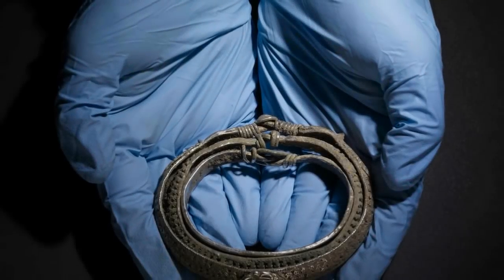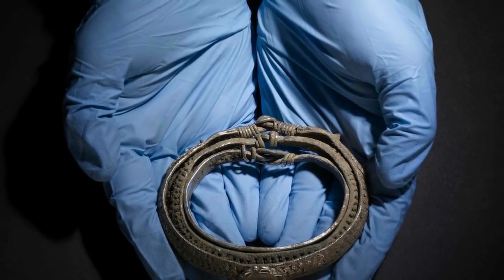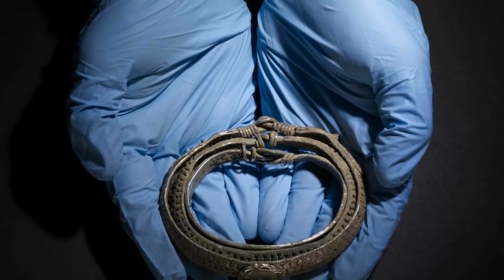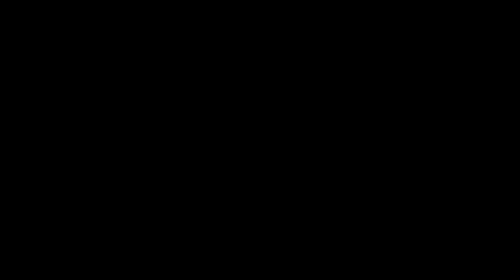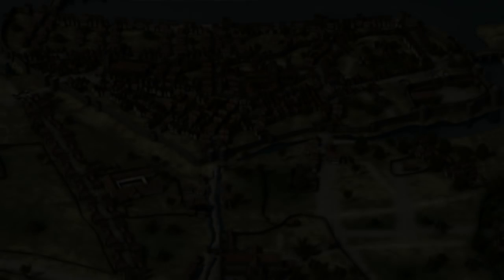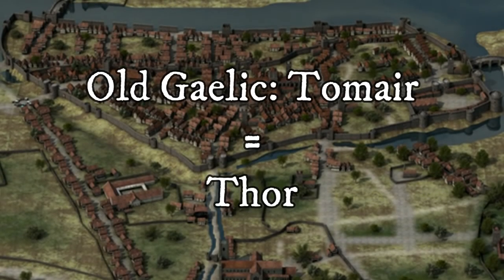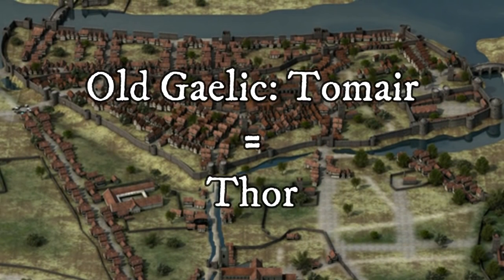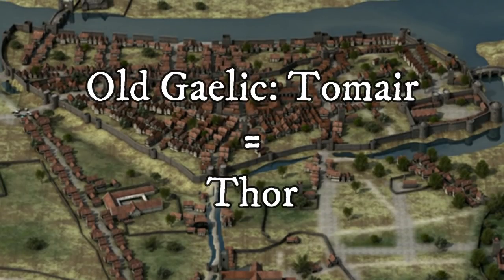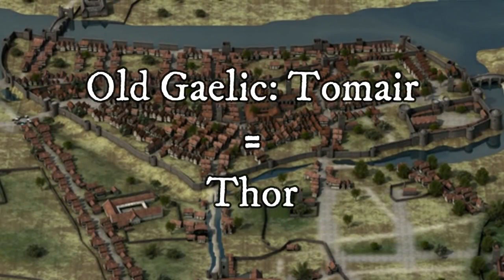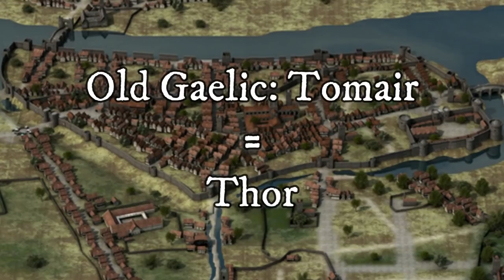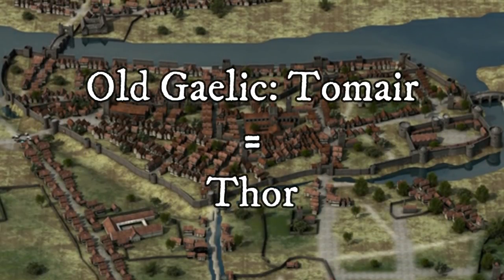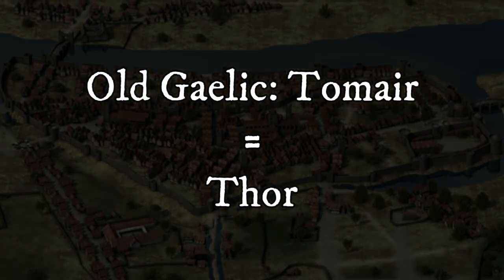In Norse tradition, rings were sometimes used in oaths. There is evidence that this Norse practice took place in Dublin, where a ring of Thor was kept. Thor very likely refers to Thor himself, who was also said to have had a sacred grove somewhere in the area, which was cut down by Brian Boru's forces when they retook the area.